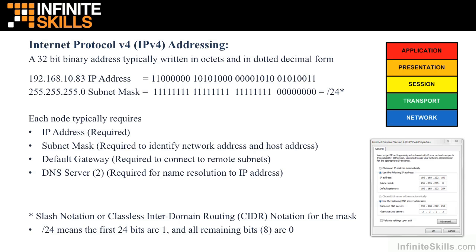This mask identifies to the routing system — also a Layer 3 function — which part of the address 192.168.10.83 represents the network that the destination node is on. The portion masked by zeros identifies which host or node on that network the destination is. It's like a boulevard and a house number: the boulevard is the subnet ID, identified by the ones in the mask, and the house number is the host ID, identified by the zeros.